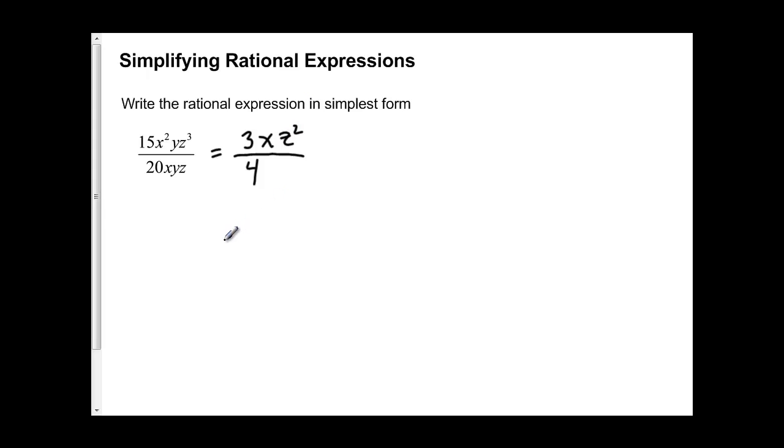There are three ways you could write this. You could write this as I have it here. We could take the fraction out front and have the variables as so. Or we could have the 4 on the bottom of all of them: 3xz squared, all over 4. They all mean the same thing.